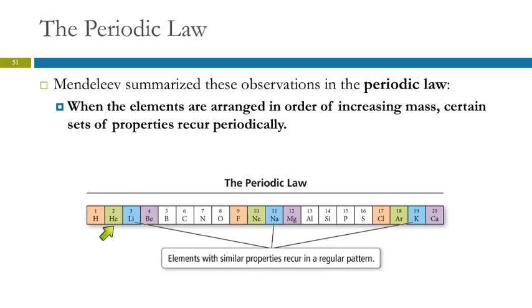So here's helium. Helium is very unreactive. It's a gas at room temperature. And over here, neon is also unreactive and a gas. And then over here, argon, also an unreactive gas. So there were these recurring properties.